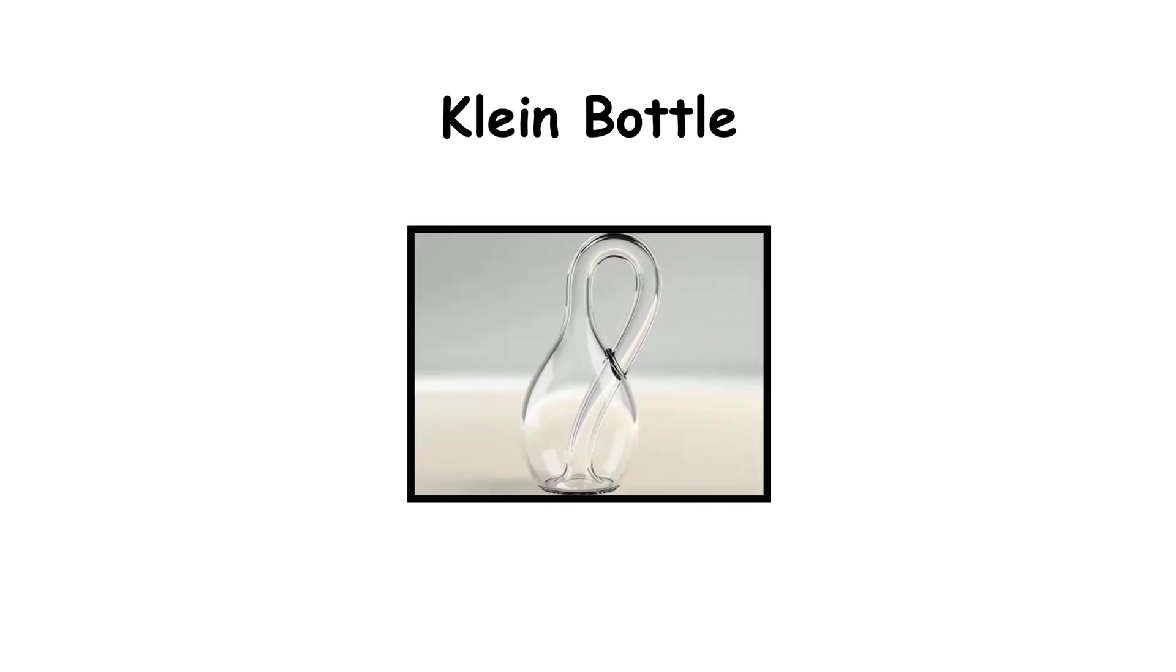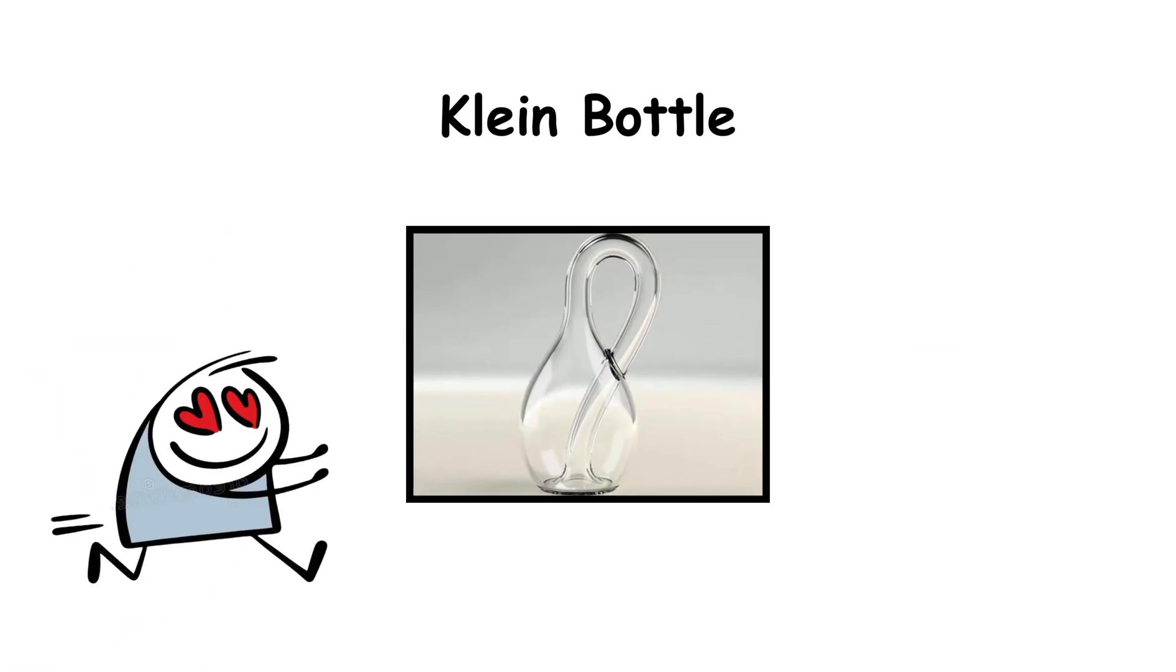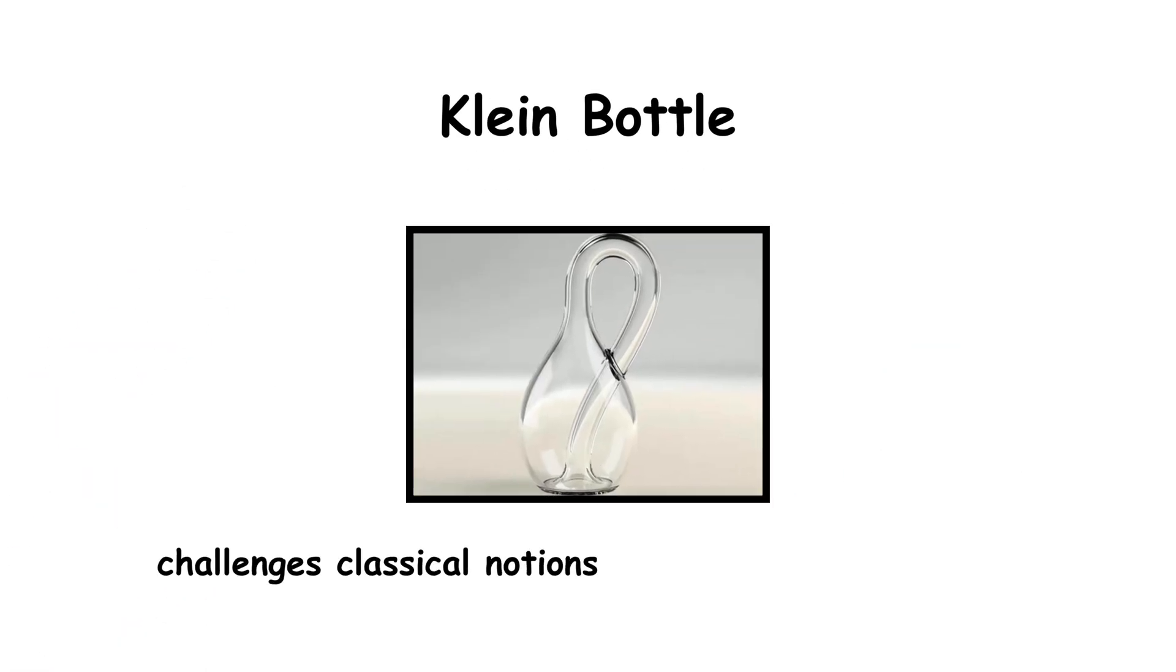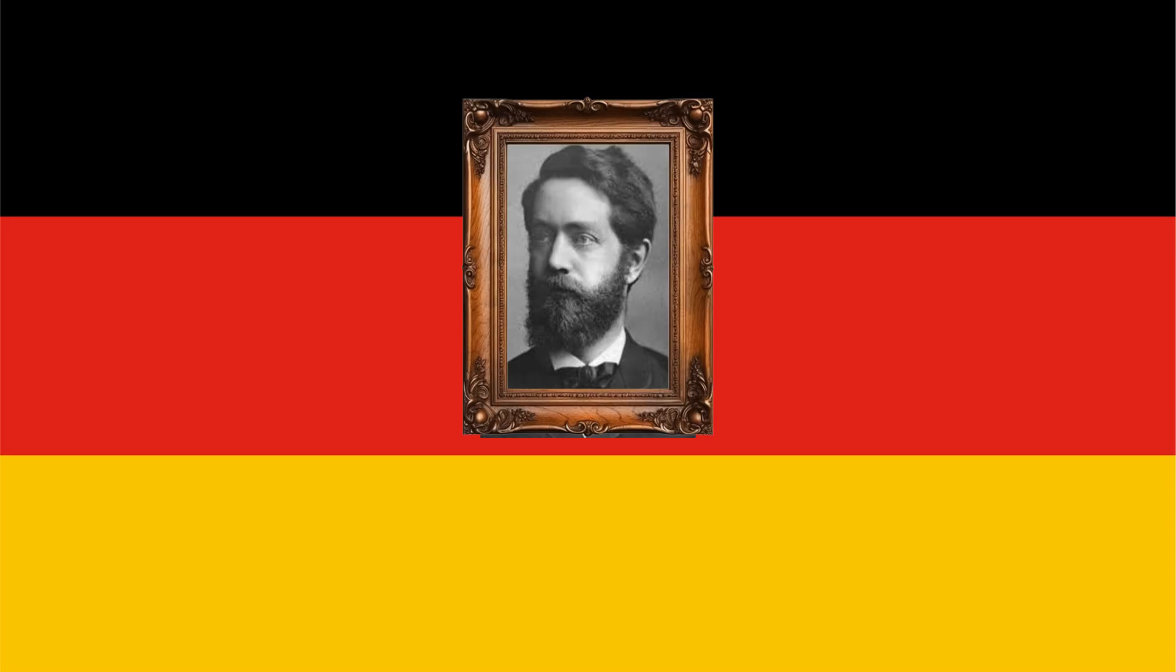Klein Bottle. The Klein Bottle is a fascinating mathematical object that challenges classical notions of interior and exterior. It was proposed by the German mathematician Felix Klein in 1882 as a non-orientable surface, meaning a figure that has no distinguishable inside or outside.